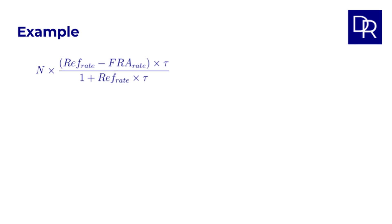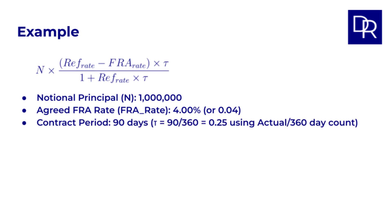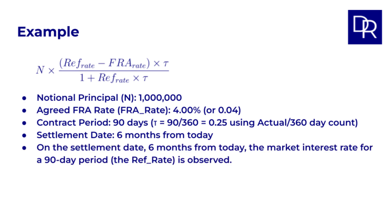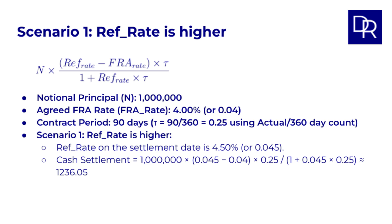Let's walk through a simple numerical example applying this formula. Imagine a forward rate agreement with notional principle N of 1 million, an agreed FRA rate of 4% (0.04), a contract period of 90 days — so tau is 90 divided by 360, or a quarter, using the actual/360 day count. The settlement date is 6 months from today, and on this settlement date the market interest rate for a 90-day period, the REF rate, is observed. Scenario 1: the REF rate is higher. Suppose the observed REF rate on the settlement date is 4.5%. The cash settlement is 1,000,000 times (4.5% minus 4%) times a quarter, divided by (1 plus 4.5% times a quarter), which is approximately 1,236.05.